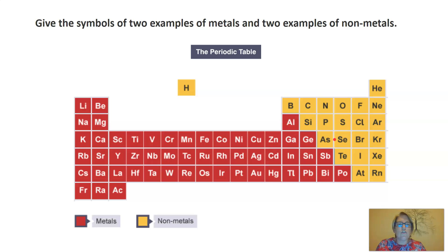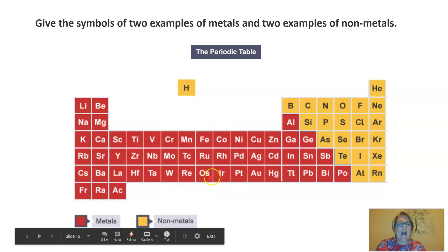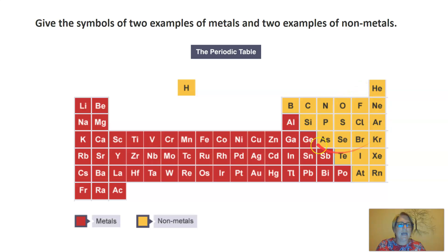I want you to try and answer this question while looking at the periodic table. It says give the symbols of two examples of metals and two examples of non-metals. For metals, you can pick any two symbols here from the red area, and for non-metals, you can pick any two examples from the yellow area.